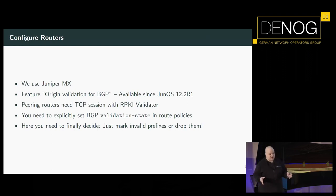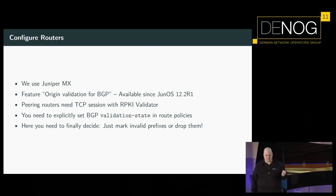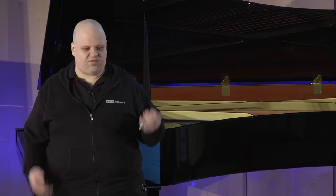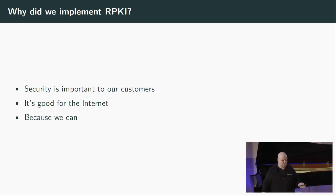Also in the route policy on the router is the final step where you need to decide: do I want to just mark them with a community, lower local pref, or do I just drop the invalid prefix? If you're not dropping them, it's debatable if you're getting something from RPKI, because even if you lower local pref, if it's the only route you've got, you've still got to use it. The safe way is to drop the route, which is what we decided after a while. Why? Because security is important to our customers, it's good for the internet as a whole, and because we can — nobody told us we couldn't, so we did.